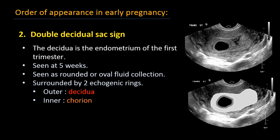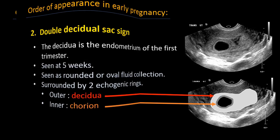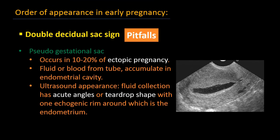As the gestational sac starts to grow, we get the double decidual sac sign. The decidua is the endometrium of the first trimester. Double decidual sac sign occurs at about 5 weeks. We have a rounded or oval fluid collection surrounded by an echogenic rim — this is called chorionic tissue — and another echogenic ring around it, which is the decidualized endometrium. The mimic of the double decidual sac sign is the pseudo-gestational sac, which is fluid collection within the endometrial cavity with one echogenic rim around it. When seen on one plane, it has acute angles, giving a teardrop appearance. This occurs in 10 to 20 percent of ectopic pregnancies and represents blood or bleeding from the tube that enters the endometrial cavity.